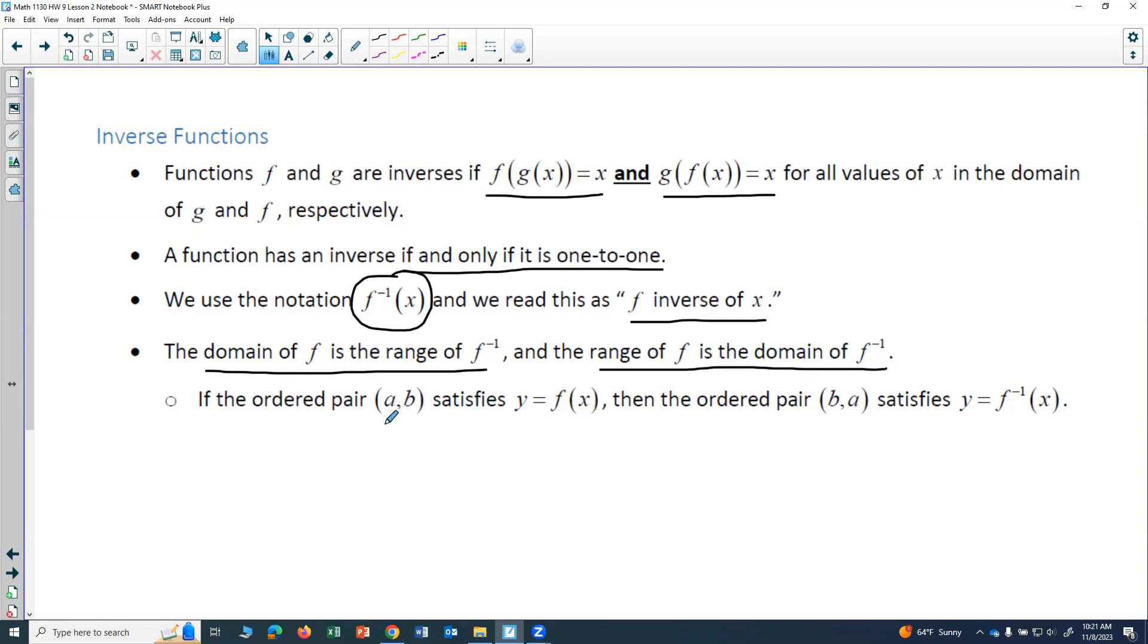What that means is that if you have some ordered pair (a,b) that satisfies f of x, then the ordered pair (b,a) would satisfy f inverse of x. So basically, the x and y values switch.